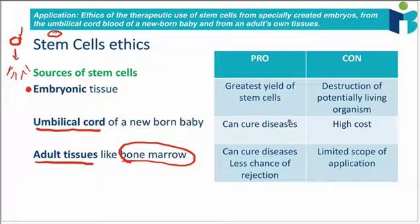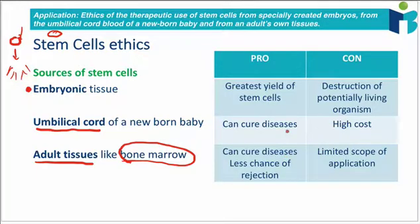Umbilical cords can still obviously cure diseases, though not quite as powerful as the embryonic ones. But at the same time, they're really costly to preserve, which might lead to only the wealthy in society being able to afford these treatments. So is this ethically valid? Something to discuss in paper two often.